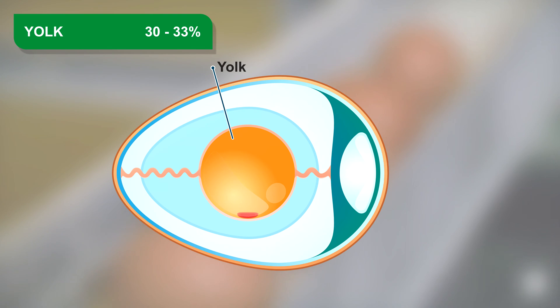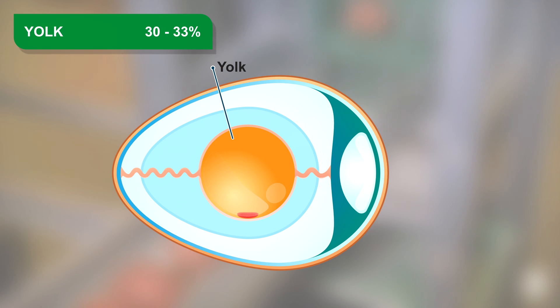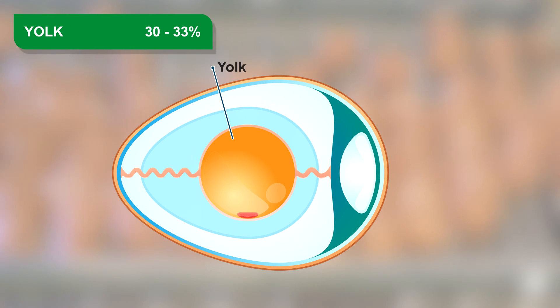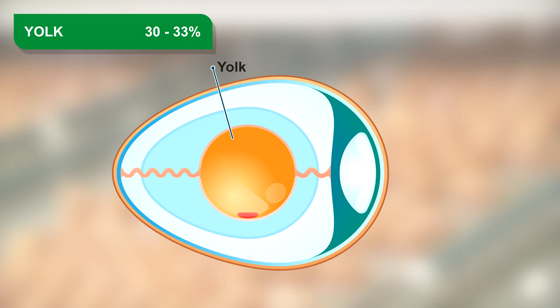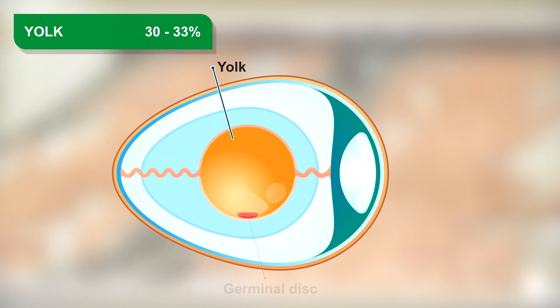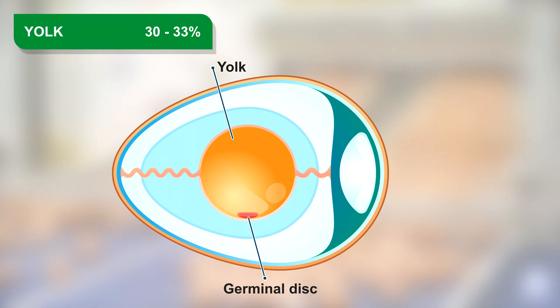Yolk. It represents 30 to 33% of the egg weight and is made up of multiple layers of white and yellow yolk, a germinal disc, a vitelline membrane, and Latebra.